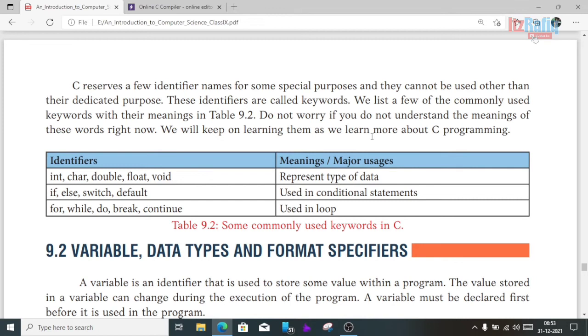In this language, there are some words with special meaning in the compiler. These words are called keywords. Some keywords are: int meaning integer data type, char meaning character data type, double for very long numbers, float for real or decimal numbers, void for type not defined.